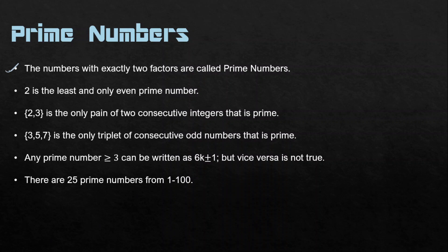The second property: 2 is the least and only even prime number. A prime number has only two factors, so for 2 those factors are 2 and 1. This makes it the smallest prime number. Note that 1 is not a prime number because it has only one factor — itself.